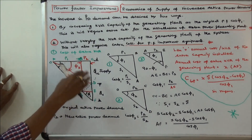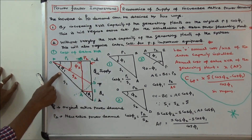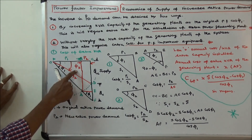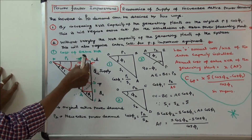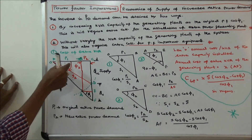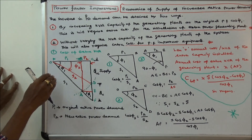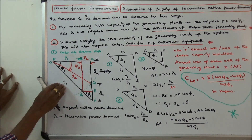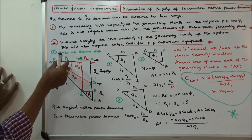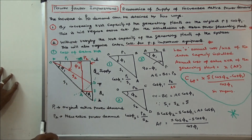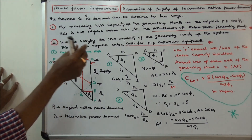This is the power triangle. Cos phi 1 is the original power factor. We are improving the power factor cos phi 2 by increasing the active power P2. P1 is the original active power. We are keeping the apparent power S1 and S2 both constant, and we are only varying the active power demand. This will require extra cost for installation of an extra power generating plant.